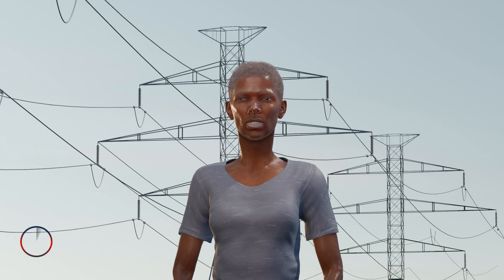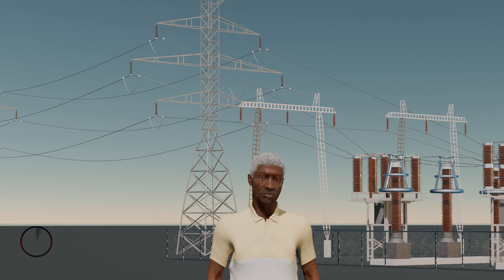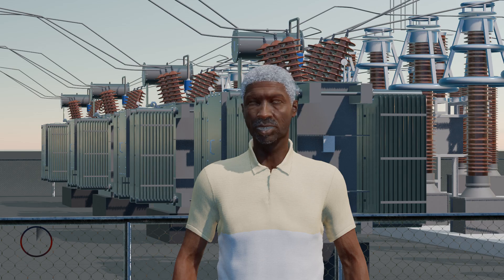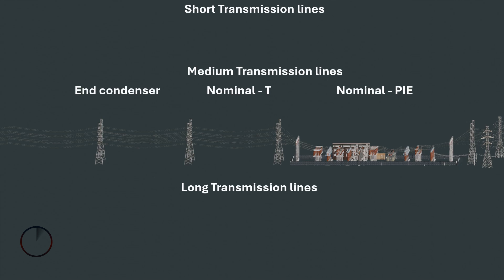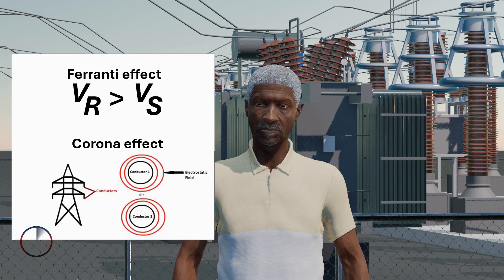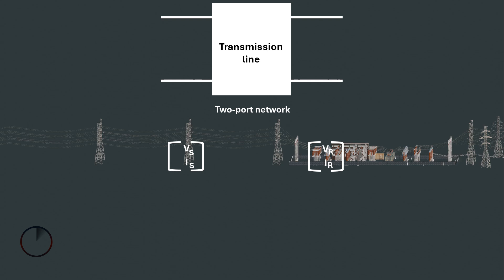The analysis of passive two-port networks is an outgrowth of reciprocity theorems first derived by Lorentz. The formula for ABCD parameters is: VS equals AVR plus BIR, and IS equals CVR plus DIR. It is important to note that transmission lines are classified into three types based on length and voltage: short transmission lines, medium transmission lines, and long transmission lines. The formula for these ABCD parameters will change based on the length of the transmission line. Certain phenomena such as corona discharge and Ferranti effect only come into play when dealing with long transmission lines, which will be covered in the coming series. Overall, ABCD parameters provide the link between the supply and receiving end voltages and currents when considering the elements to be linear in nature.